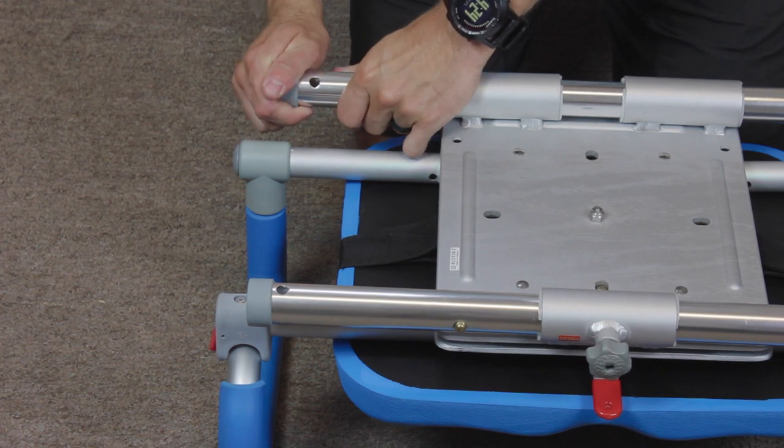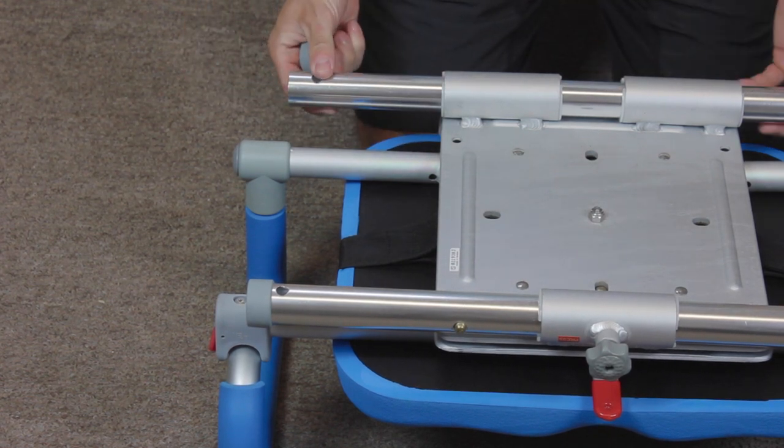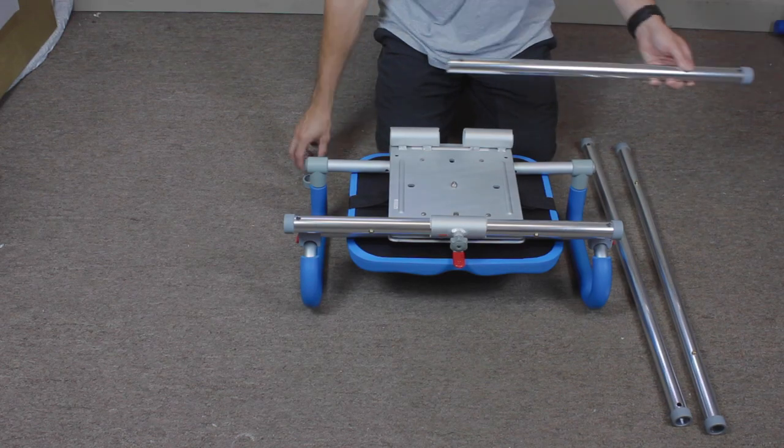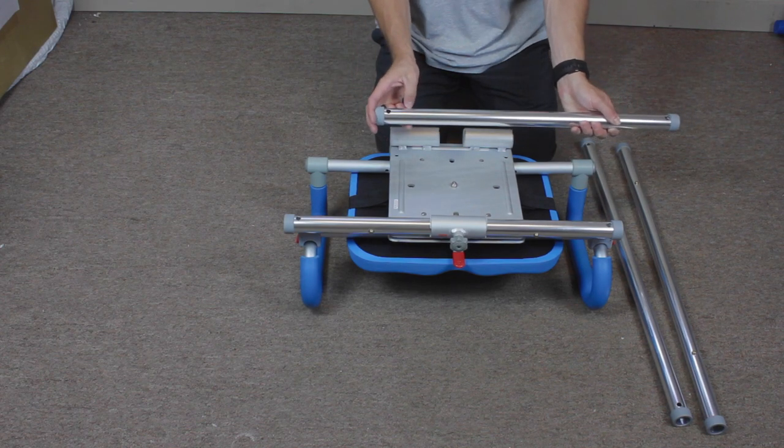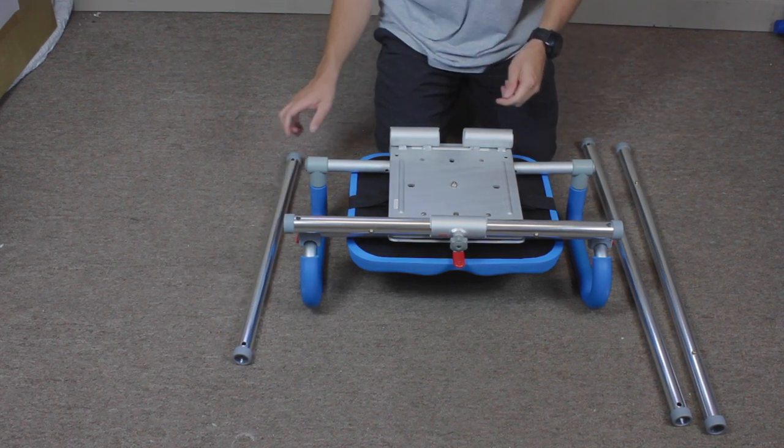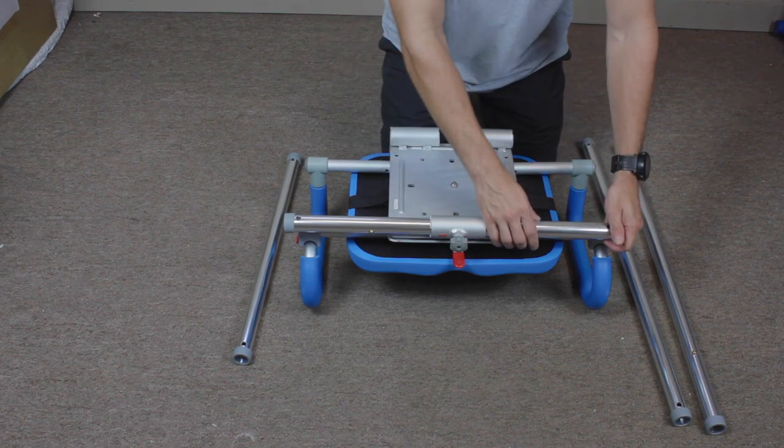If you're going to remove the standard rails, take the end cap off one side of the rail and then pull it through the base of the chair. Replace the end cap and set the rail aside. You'll want to do this for the front and back of the chair.